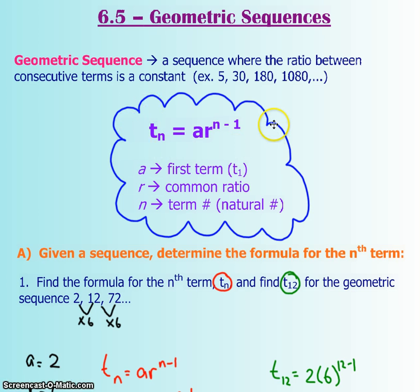Here's our template for a geometric sequence. This still represents the term value. N is going to be your term number. Your R is going to be your common ratio, so what's being multiplied each time. And then A is still your first term. So it's very similar to what we've seen before. The only differences are obviously the equation and there's no D, it's an R this time.